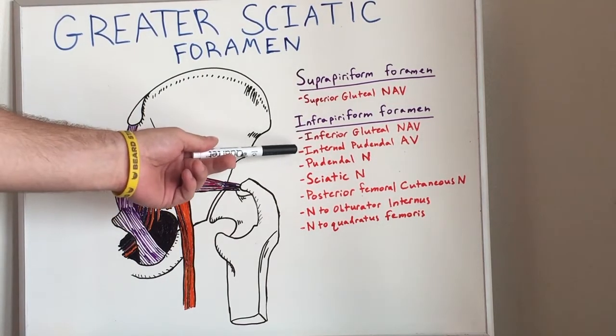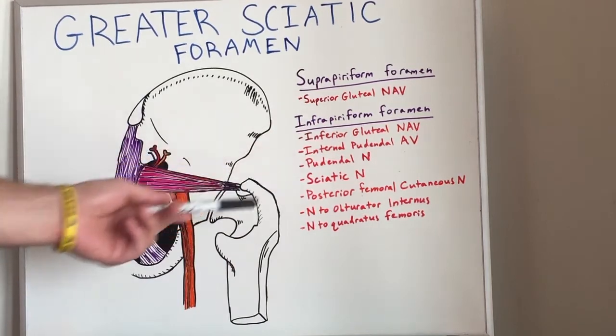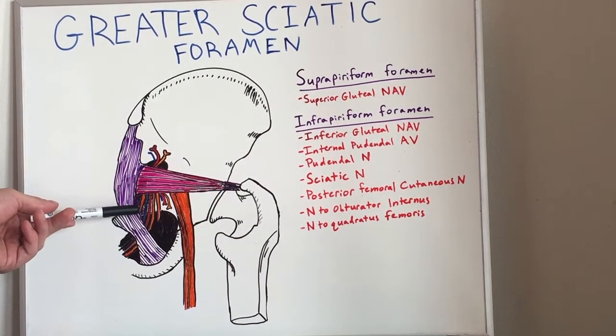We have the internal pudendal artery and vein, as well as the pudendal nerve. All of these supply the perineal area.